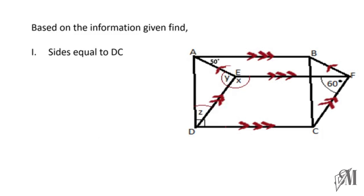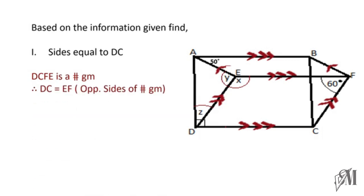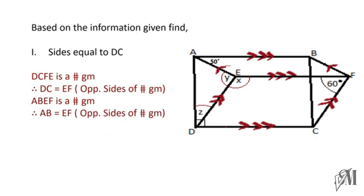Now find the sides equal to DC. We can see that DCFE is a parallelogram, so DC equals EF. Similarly, ABEF is also a parallelogram, so AB equals EF. In both cases, EF equals DC and AB. Therefore, we can write AB equals EF, and both AB and EF are equal to DC — so there are two sides equal to DC: AB and EF.